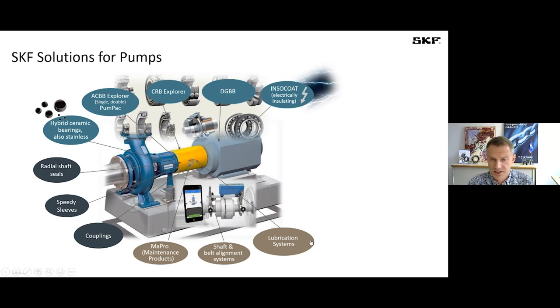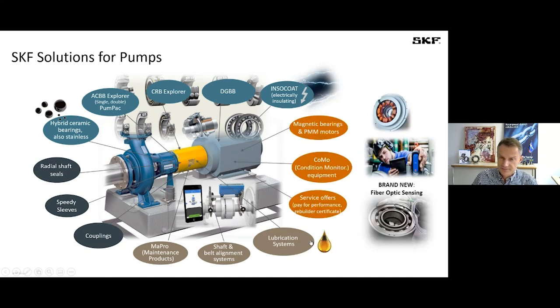And SKF is very large also in lubrication systems. And recently of course everybody is working a lot in the digital and the mechatronics area. So here, maybe only a few people know that SKF is also a market leader in the magnetic bearings area and for permanent magnetic motors, especially in the oil and gas field, but recently also in the area of chillers and blowers. And what is brand new is fiber optic sensing, and we will have this at the end of this presentation.